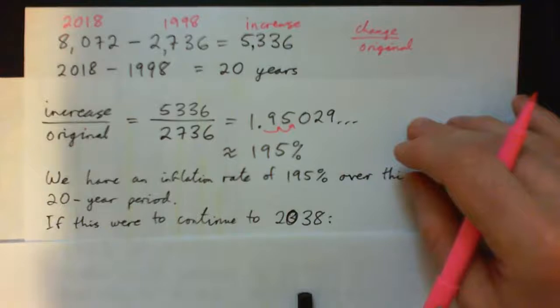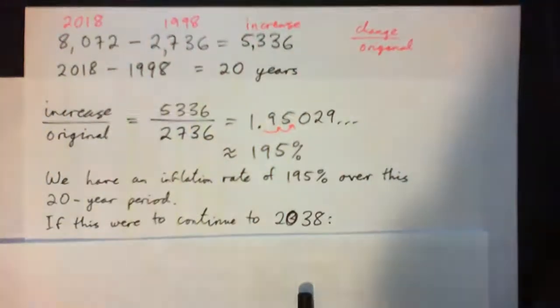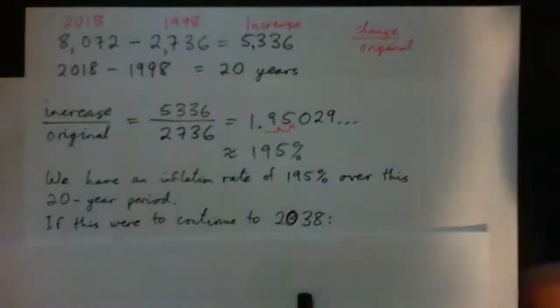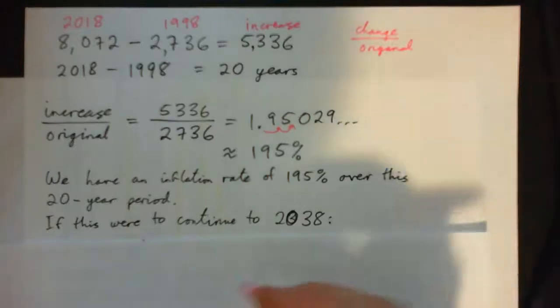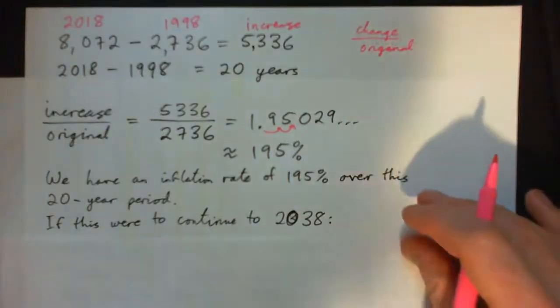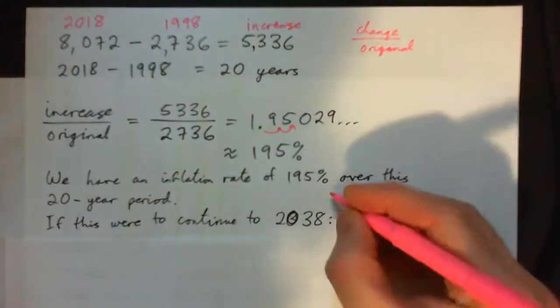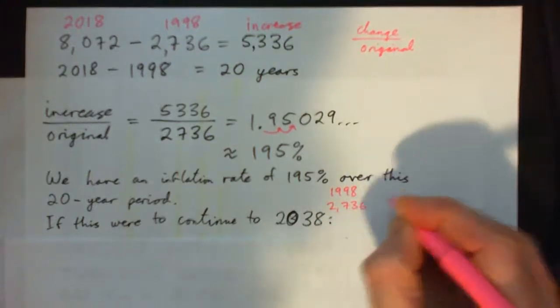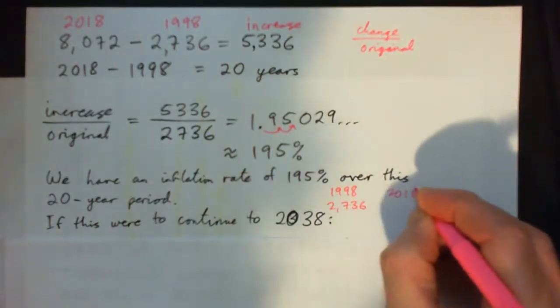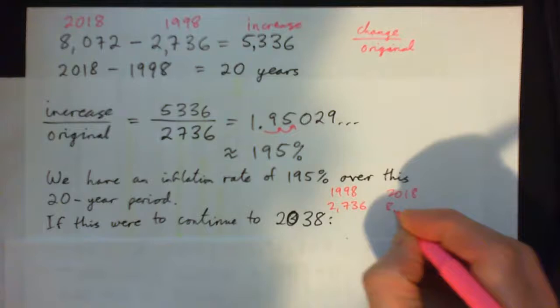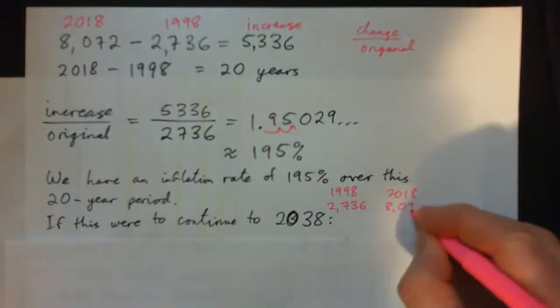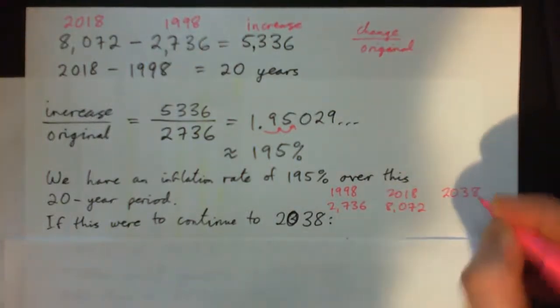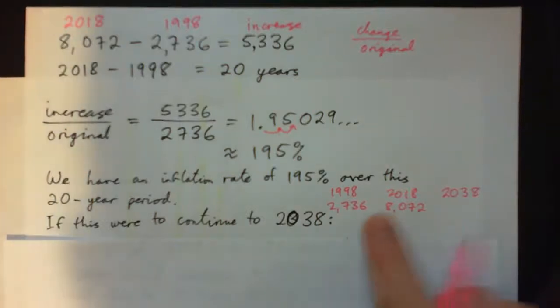If this were to continue to 2038, what would happen? How much would it increase by? It's gone from 1998, we have 2,736. 2018, we have 8,072. So what's it going to be by 2038? That's another 20 years' time.